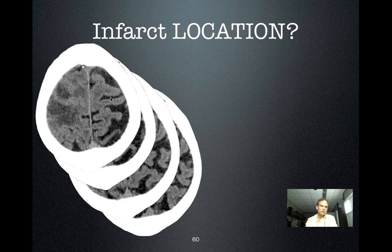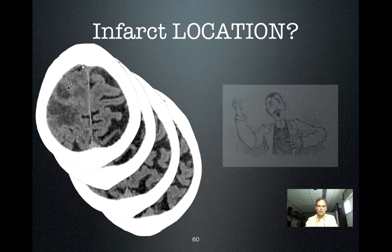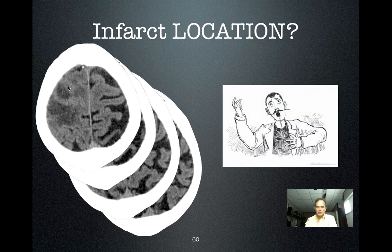Here we have the central sulcus because we have the cingulate sulcus — cingulate sulcus forward and to the side — central sulcus. You've got the infarct encroaching a little bit on the frontal lobe, specifically the precentral gyrus or motor cortex, but not much.